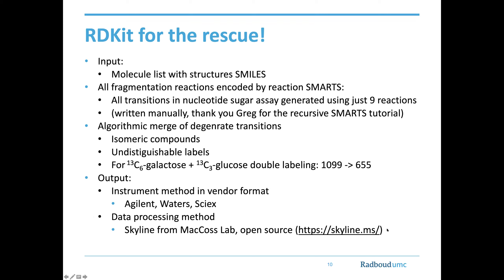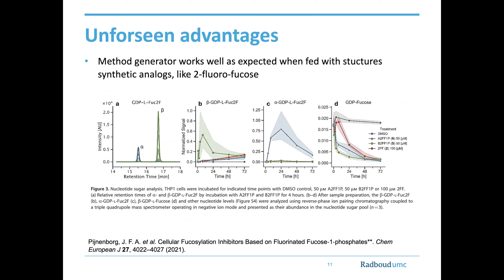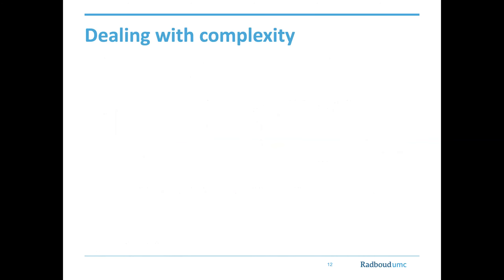The data processing method is also generated at the same time, keeping everything in sync. For data processing we use the open-source project Skyline, developed for targeted proteomics — those guys are doing a great job. This also has unforeseen advantages: the reactions developed for natural sugars work very well for synthetic analogues. We had a simple collaboration with an organic synthesis group just across the street synthesizing fluorinated analogue sugars — we just fed the structures into the program and were able to evaluate the inhibition and effects on these compounds. It simplifies our work tremendously.